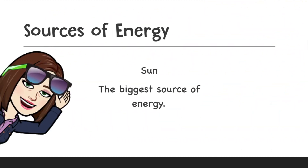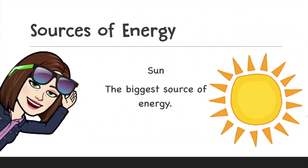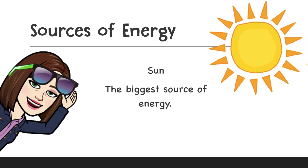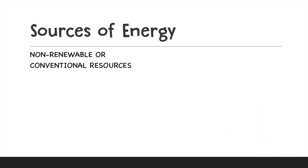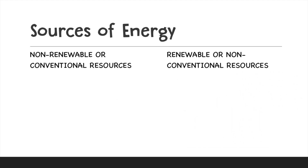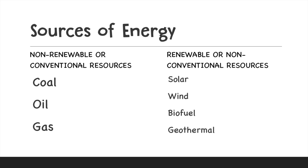Sources of energy. Our sun is the biggest source of energy on planet Earth. Other sources of energy are divided into two different columns: non-renewable or conventional resources, which would be coal, oil, or gas — what we call fossil fuels — and renewable or non-conventional resources, which can be solar, wind, biofuel, geothermal, and hydroelectric.